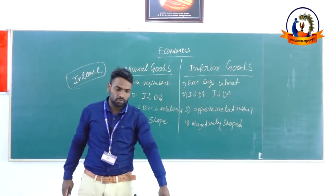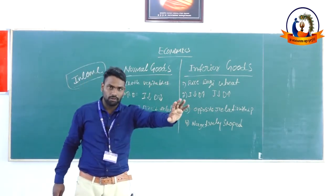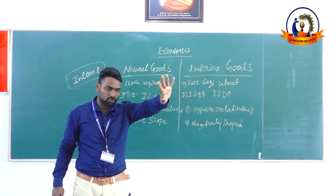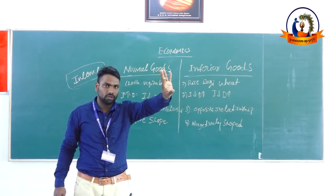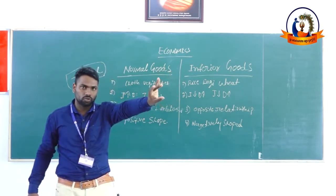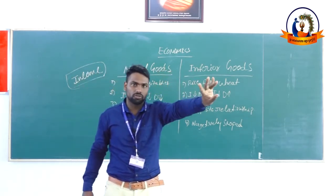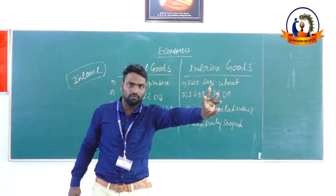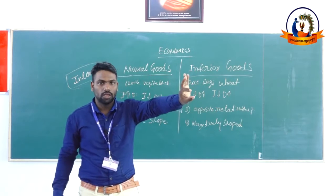We already know about four types of goods. The first is substitute goods, second is complementary goods, third is normal goods, and fourth is inferior goods.